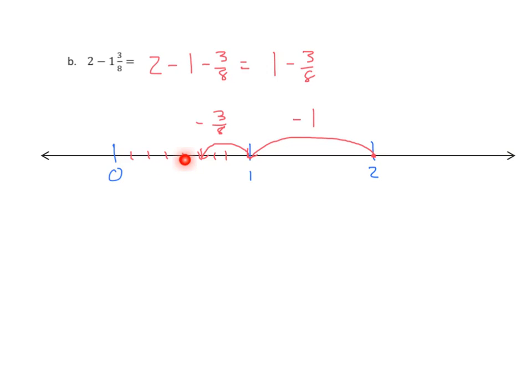Where am I on the number line? Well, 1, 2, 3, 4, 5 eighths. My answer is 5 eighths. And we'll label that on our number line as well.